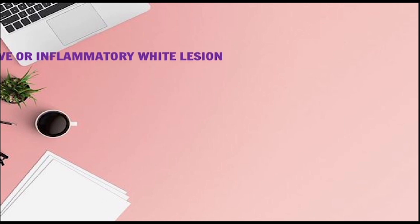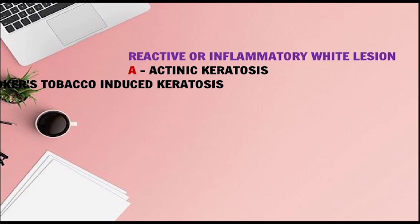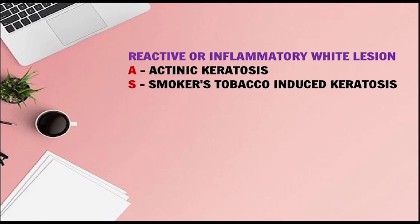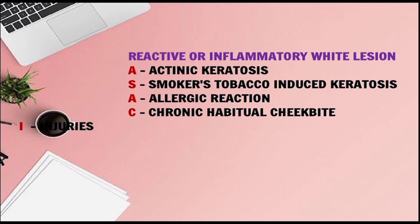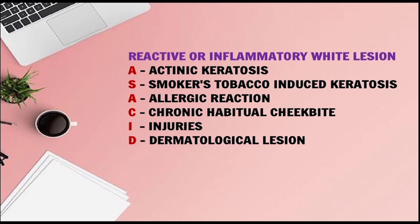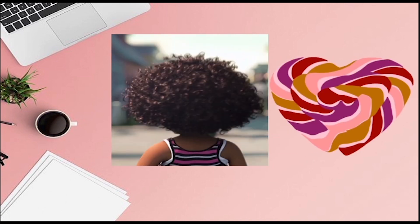He is dressed as a CID — reactive or inflammatory white lesions. A for Actinic Keratosis, S for Smokers/Tobacco-Induced Keratosis, A for Allergic Reaction. CID: C for Chronic Habitual Cheek Bites, I for Injuries, D for Dermatological Lesion. F for Frictional Keratosis.